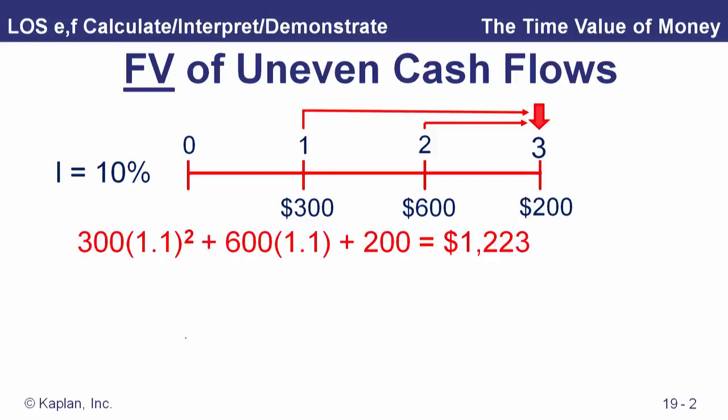That $300 spends two periods in the account up to time three, so there's our compounding factor. The $600 deposit earns interest for one year, so that'll be another $60 in interest. And then that $200 is deposited at time three, so that's already the time-three value. Now we add up these three future values to get the total future value of $1,223.